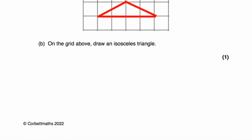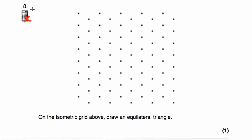Question number eight says: on the isometric grid, draw an equilateral triangle. On this isometric grid, if we choose a point and join it to the point above or to adjacent points, each of those lines are the same length. So to draw an equilateral triangle — which has three equal-length sides — we join that point to that point, that point to that point, and that point to that point. Each of those lengths would be the same, so that would be an equilateral triangle.